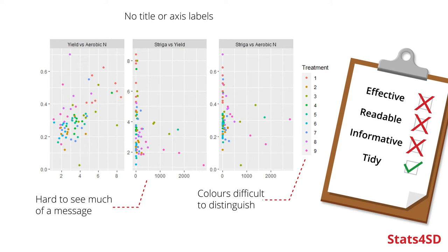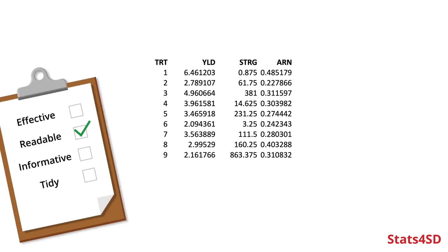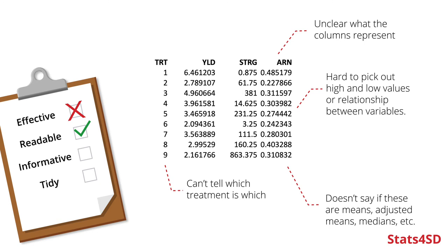So maybe I decided to try a table instead. More or less any software package can easily produce a table of summary statistics — here are my three key variables. But just taking the output as it comes, yes I can read some numbers and cross-reference treatments and columns, but this is not a particularly effective way of displaying the data. It's not easy to pick out what the higher or lower values are, or the relationship between variables. There's no information to tell us what the columns represent, what the treatments are, or whether these are means, medians, or adjusted means from a model.